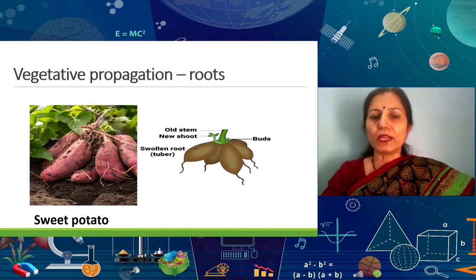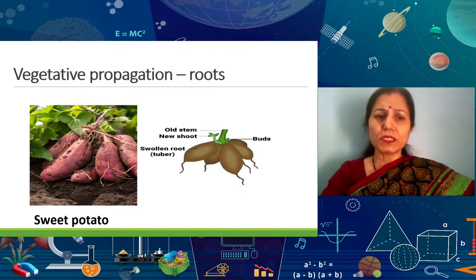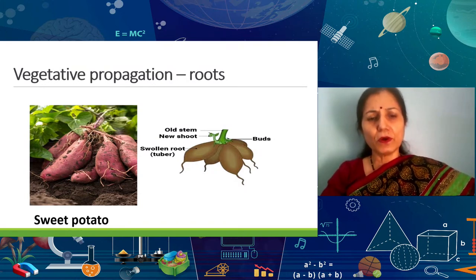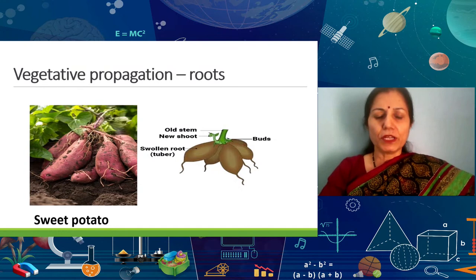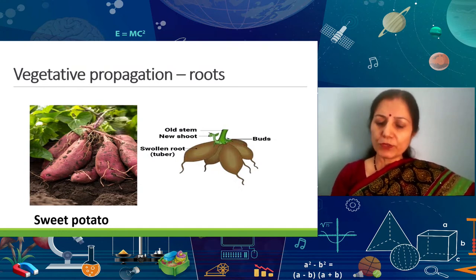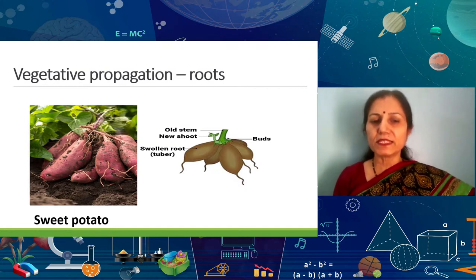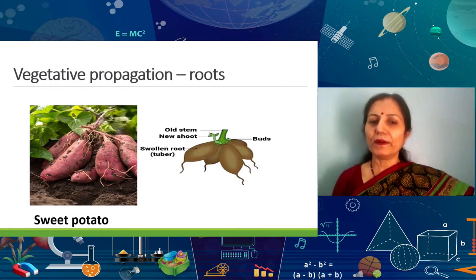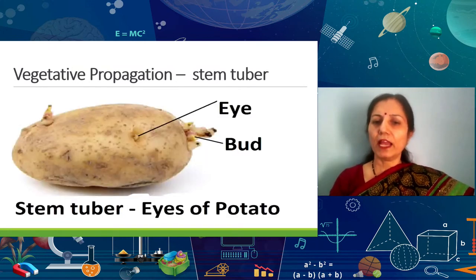Let us talk about vegetative propagation through roots. It can be through taproot as in guava tree, or through adventitious swollen tuberous roots as in sweet potato, asparagus, or dahlia. These swollen tuberous roots have adventitious buds which sprout and form a young plant that gradually grows into a complete plant. Next time when you eat sweet potato, remember that it can be sown in the soil to get a new plant. Let us also talk about vegetables found in your kitchen and how they help in vegetative propagation.